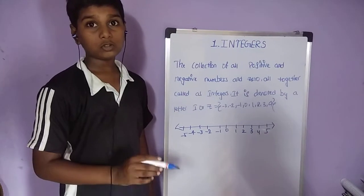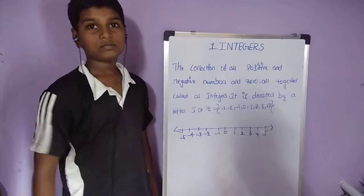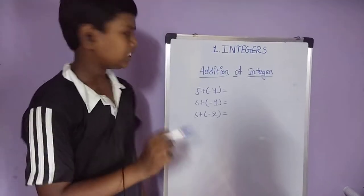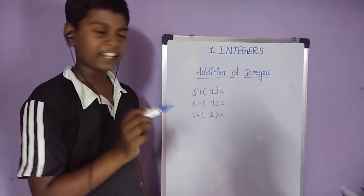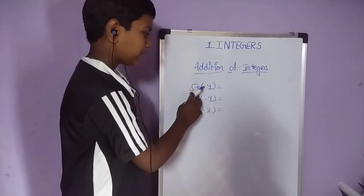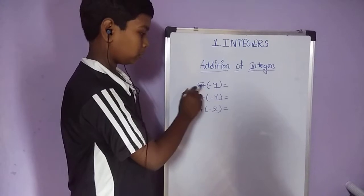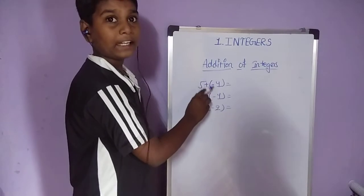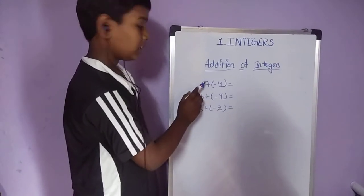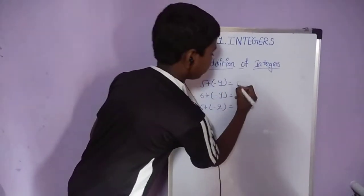Let us do addition of integers. What is addition of integers? Let me take an example: 5 plus bracket minus 1 close bracket. Plus into minus is equal to minus, so 5 minus 1 is equal to 4.